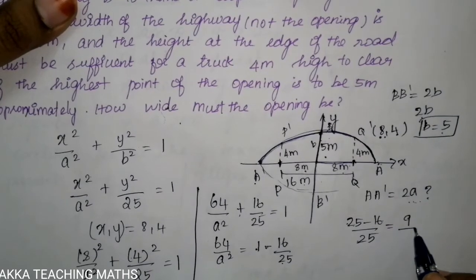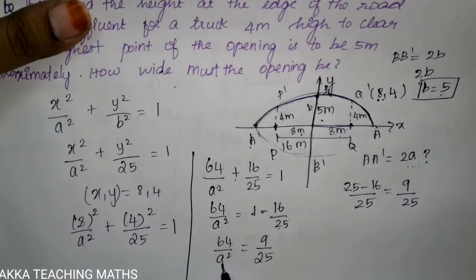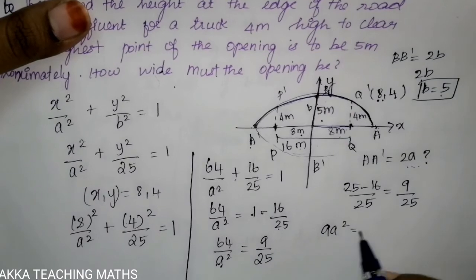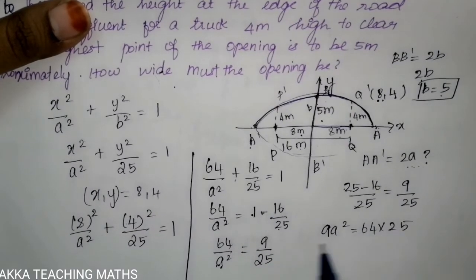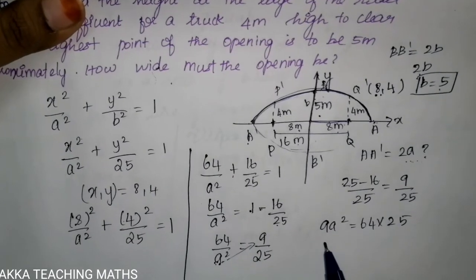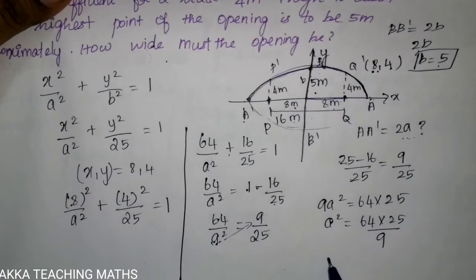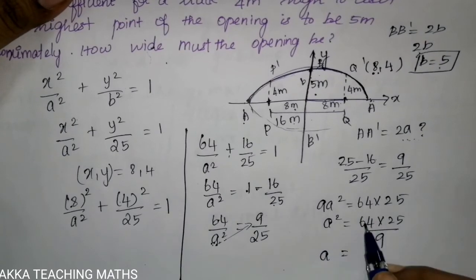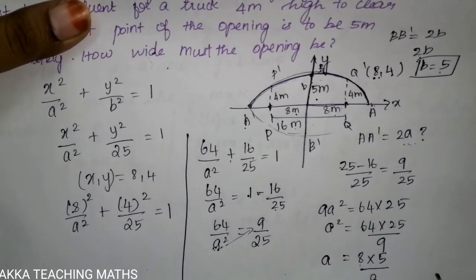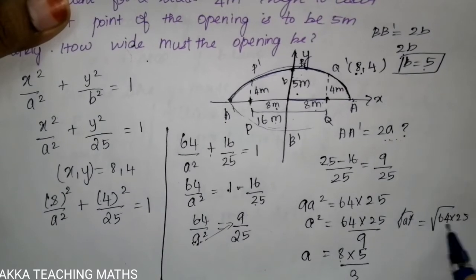So 16 is divided by 25, and 64 divided by a² equals 9 divided by 25. We cross-multiply: 9 × a² = 64 × 25. Cross multiplying gives a² = (64 × 25) / 9. Taking the square root: a = √(64 × 25 / 9). Simplifying, √64 = 8, √25 = 5, √9 = 3, so a = (8 × 5) / 3 = 40/3.